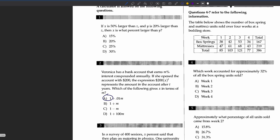Question four: This table shows the number of box springs and mattresses units sold over four weeks at a store. Which week accounts for approximately 32 percent of all the box spring units sold? We can input it into our calculator or do it by hand. We need to compare 38 over 167, 42 over 167, 53 over 167, and 34 over 167. Since it's 32 percent, I'm gonna guess that it's c.